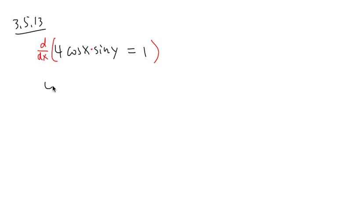For the first function, it's 4 cosine x, nothing changed. And you multiply by the derivative of second, derivative of sine y is going to be cosine, and the inside stays the same, and then you multiply by the derivative of inside, which is y. The derivative of y is going to be dy/dx.